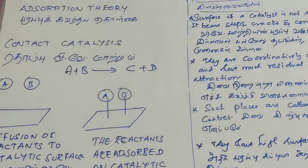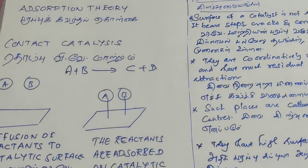All reactant molecules come in contact with the catalytic surface and the reaction takes place. An example reaction: A plus B gives C plus D. The reactant molecules diffuse to the catalytic surface.